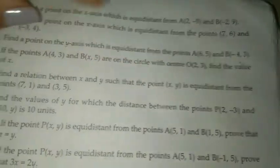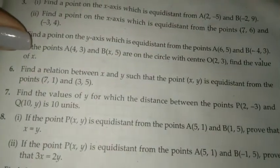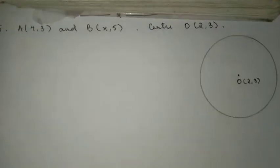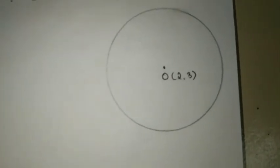Now, it says that A and B are on the circle with center O at (2,3), okay? We are on the circle. Center O, 2,3.